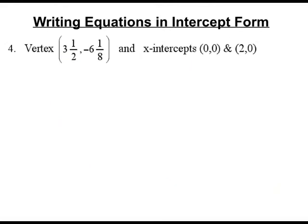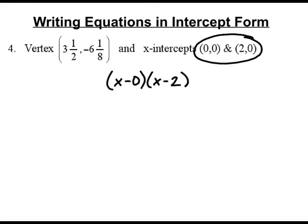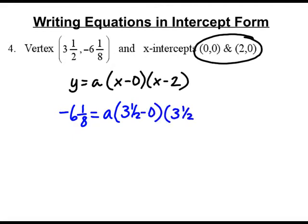Let's try one more and we'll be done for the day. Last one I picked. Not so nice. It has some wonderful fractions in it. So we start off the same way we did before. We're going to say x is at 0, so x minus 0. x is at 2, so x minus 2. We don't know what a is and we know y. Okay, so now we're going to do a little bit of math. We're going to have an answer as negative 6 and 1 eighth equals a, 3 and a half minus 0 and then 3 and a half minus 2.